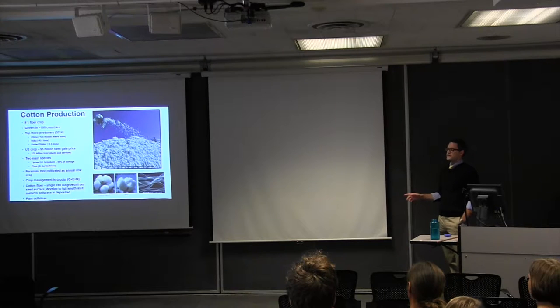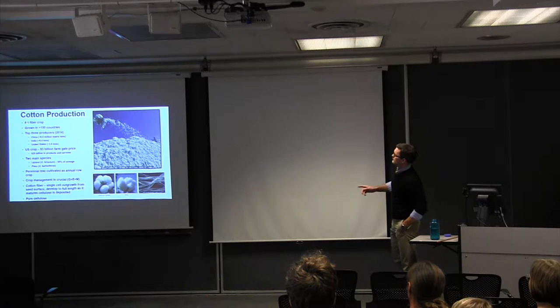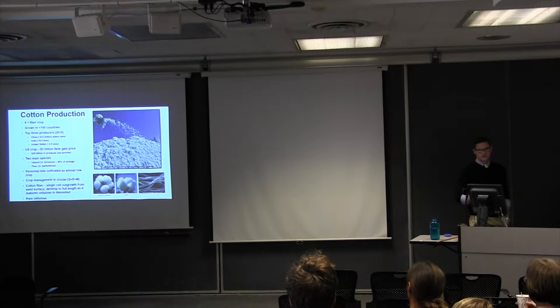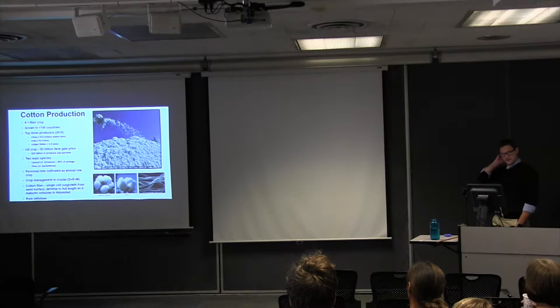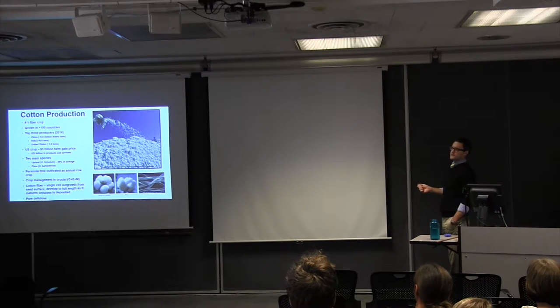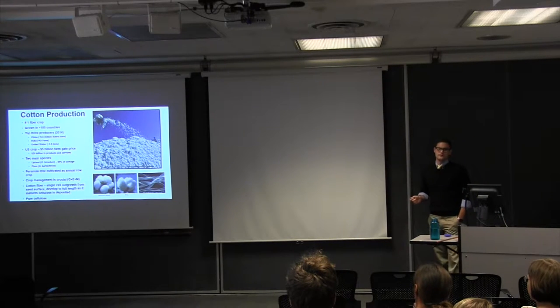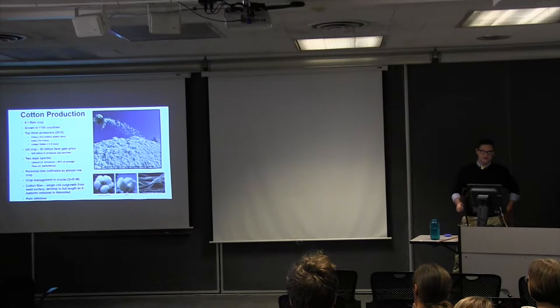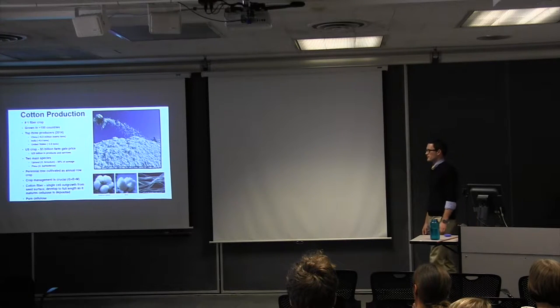In this bottom photo, you can see that Upland's on the left. I don't know if it's come out that well on the screen, but typically Upland cotton has a little bit wider fiber, where Pima cotton is a little bit more cream-colored. What's interesting about cotton is that it really is a perennial tree that we cultivate as an annual row crop. And because of that, crop management is very crucial. And so the problems of G by E by management become pretty central in terms of how the crop is produced.